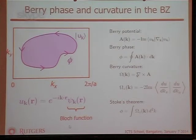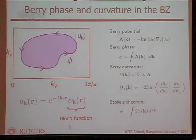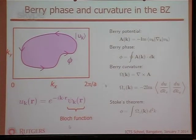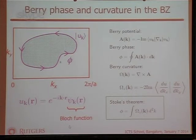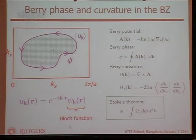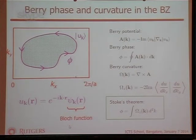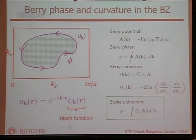There's another object called the Berry curvature — it's the curl of the Berry connection, and it also has a form in terms of inner products of wave function derivatives. The Berry curvature and Berry phase are related by a kind of Stokes theorem: if I divide a region into little squares, calculate the Berry phases around each little square, and divide by the area, that's the Berry curvature. Integrating the Berry curvature over a region equals the Berry phase around the perimeter.